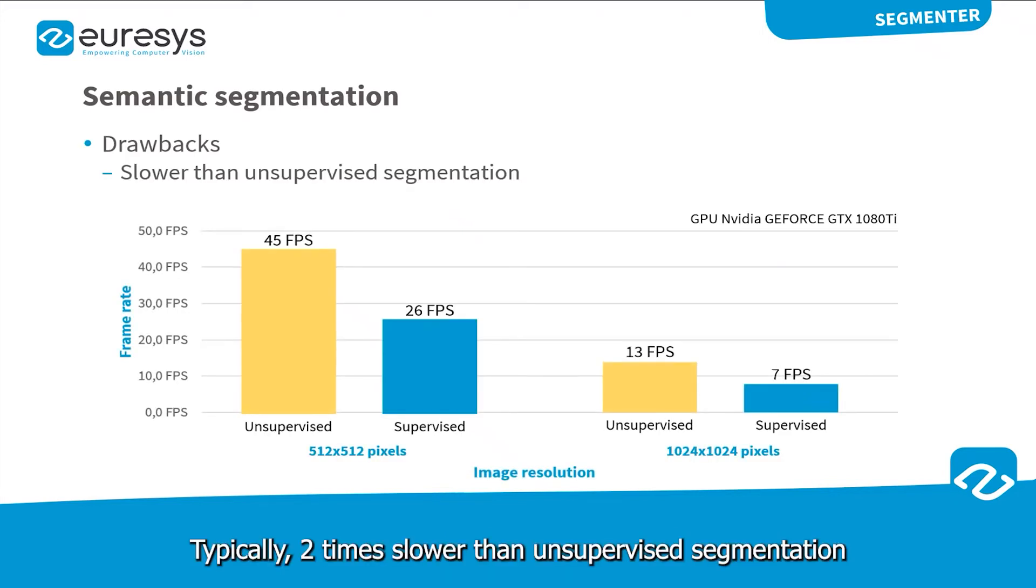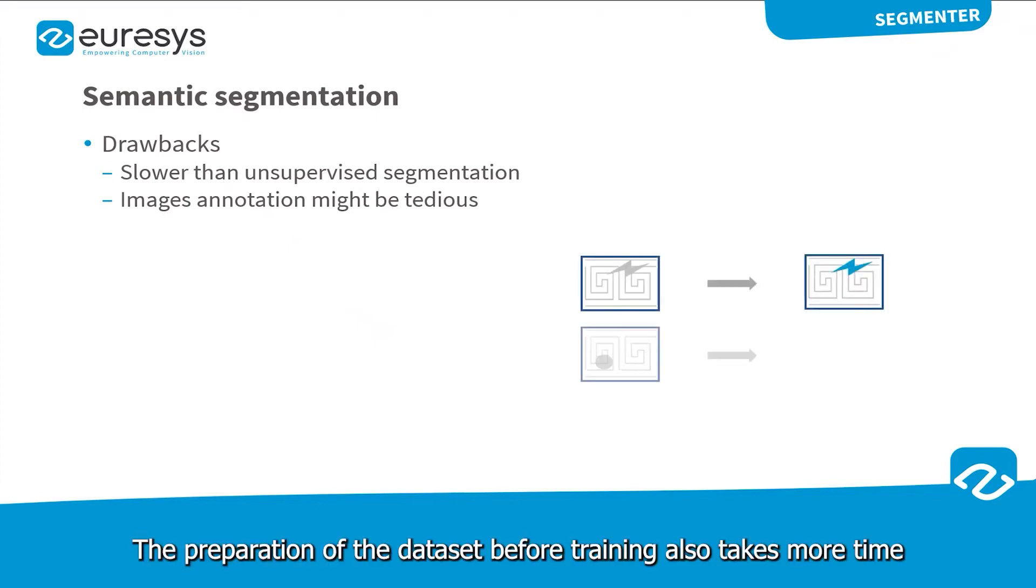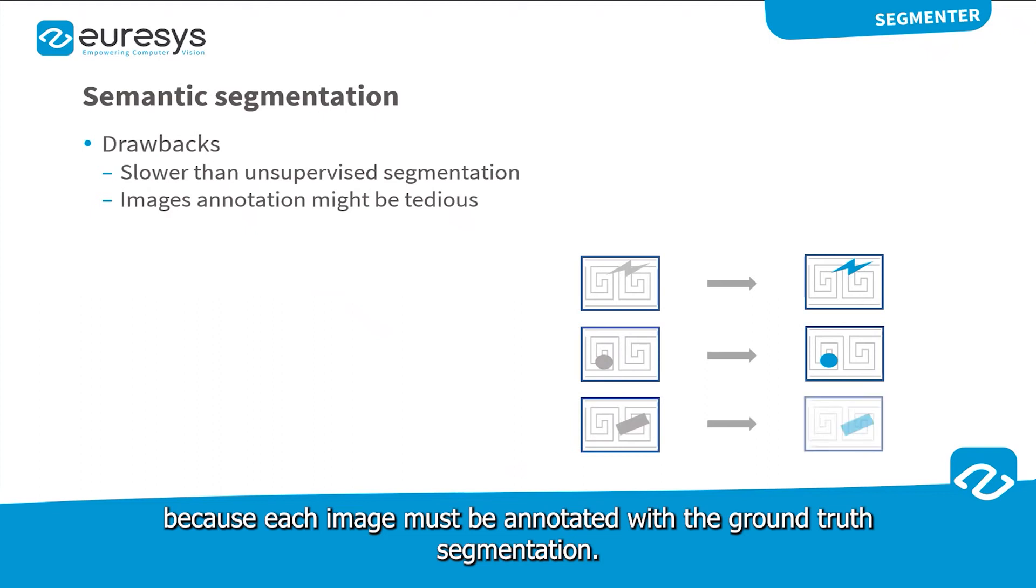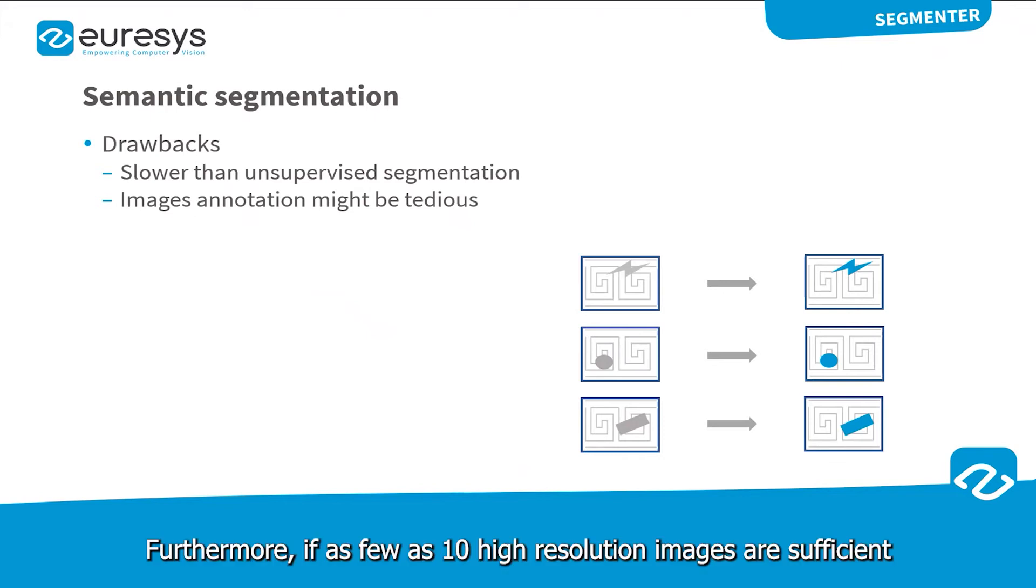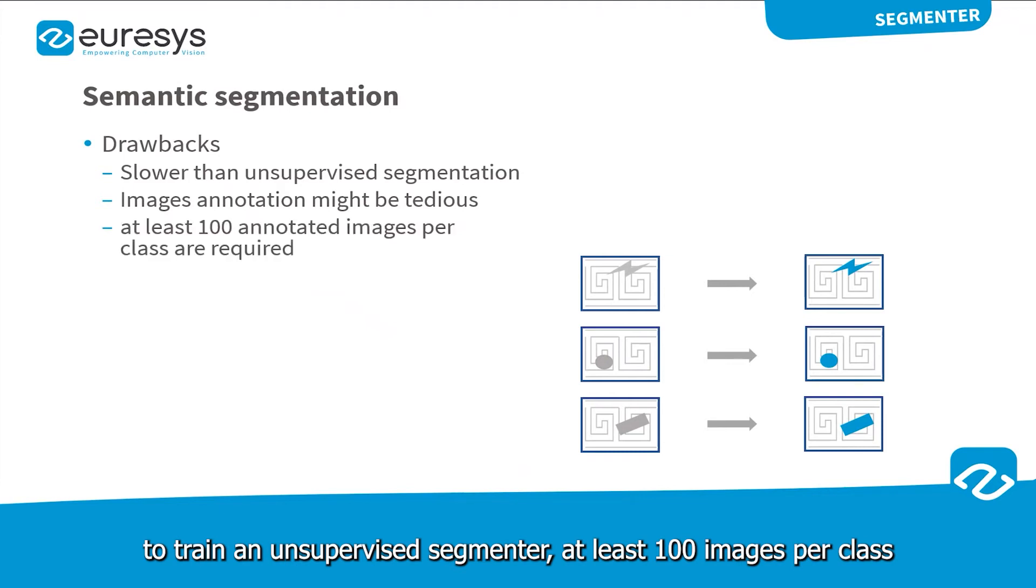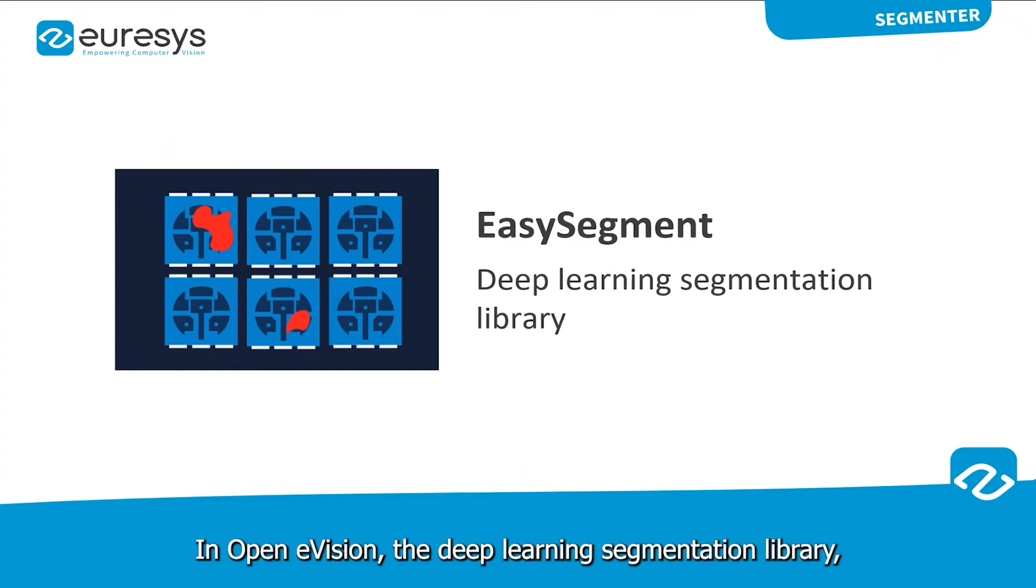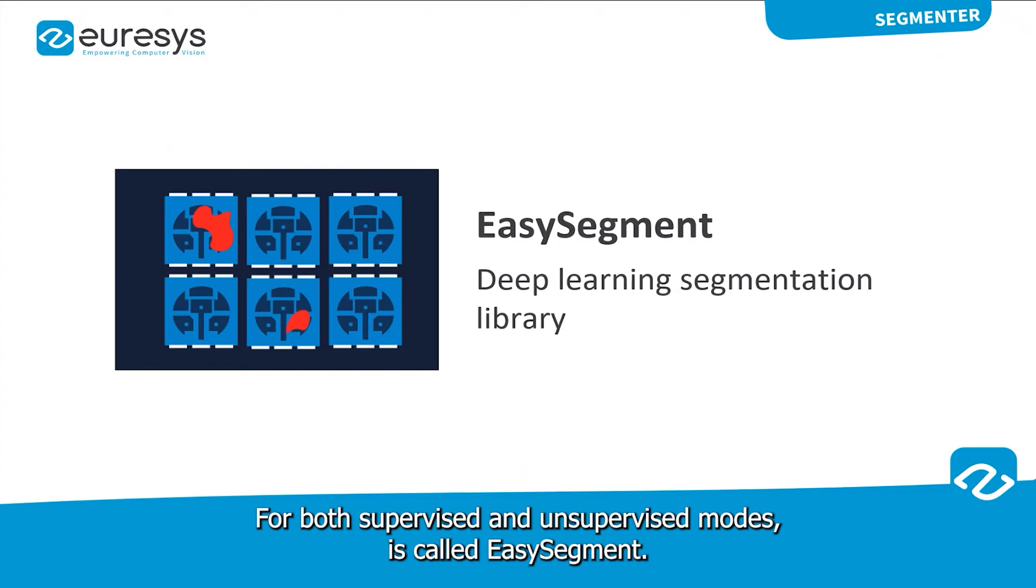The preparation of the dataset before training also takes more time because each image must be annotated with the ground-truth segmentation. Furthermore, if as few as 10 high-resolution images are sufficient to train an unsupervised segmenter, at least 100 images per class are required for a supervised segmenter. In OpenEVision, the deep learning segmentation library for both supervised and unsupervised mode is called EasySegment.